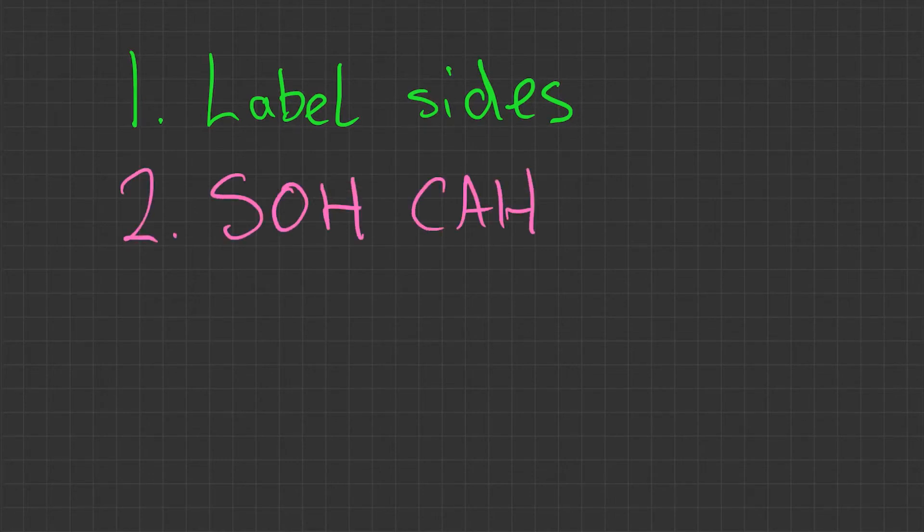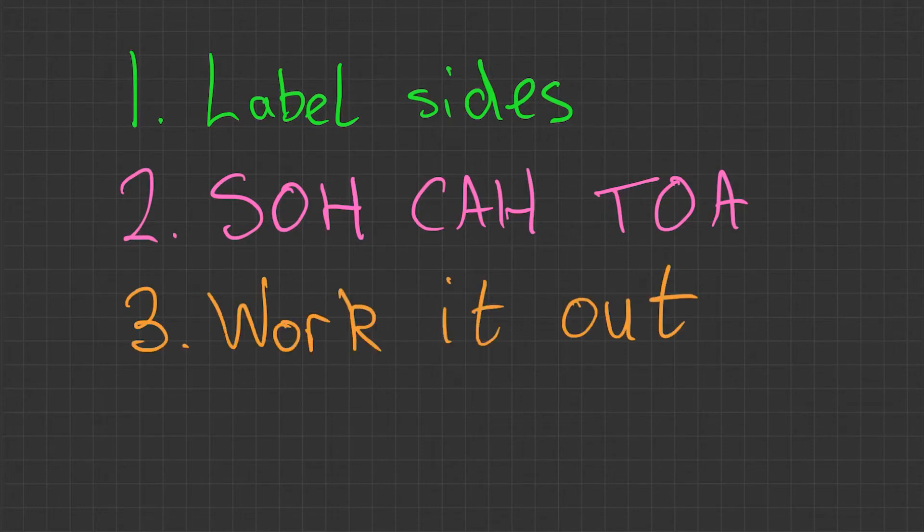The second step is SOH CAH TOA. I always write this out with these kinds of questions and then decide which one of them I need. Thirdly, work it out. You'll have all the info at this point. It's then just a case of substituting and working it out.